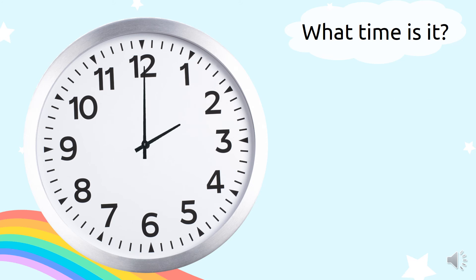What time is it? To tell time, we first look at the hour hand. Right now, the hour hand is pointing to 2. So, the hour is 2. The minute hand is pointing to the 12. When the minute hand is pointing to 12, it is 0 minutes. So, the time is 2 o'clock.